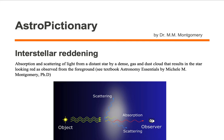Interstellar reddening is the absorption and scattering of light from a distant star by a dense gas and dust cloud that results in the star looking red as observed from the foreground.